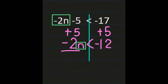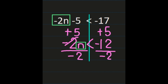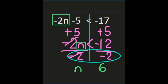Now it's time to isolate n by dividing both sides by negative 2. On the left hand side, my negative 2s simplify out, leaving me with just n. On the right hand side, negative 12 divided by negative 2 — a negative divided by a negative is a positive, and 12 divided by 2 is 6. We just divided both sides by negative 2, so we have to flip that inequality sign. Our answer is n is greater than 6.